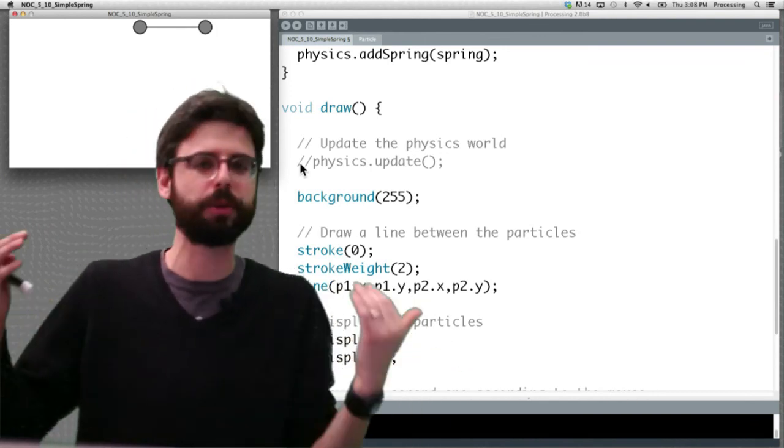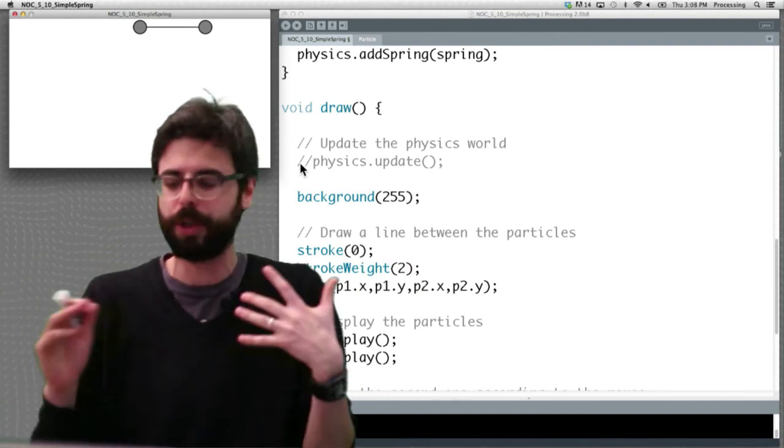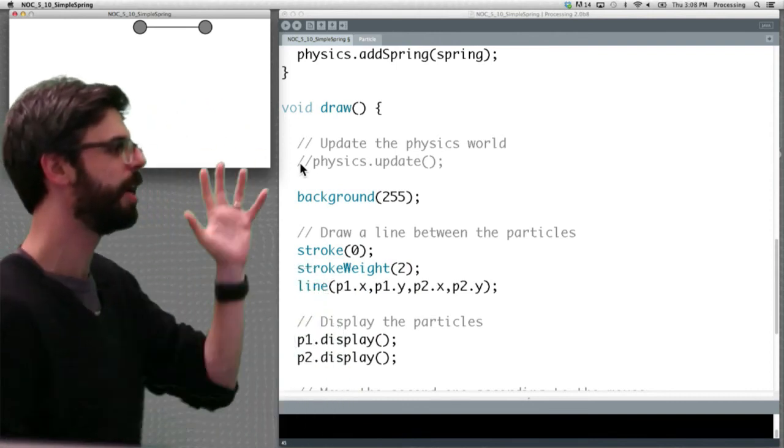We're only going to update the physics of all the particles and all the springs if we call update. And traditionally we're going to call update once through draw. There might be some strange scenarios where you do it in a different way, but this is kind of the typical way of doing it.